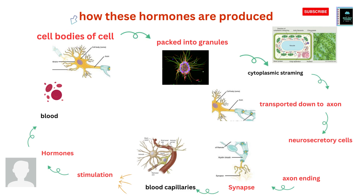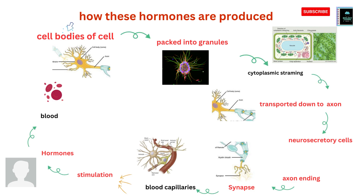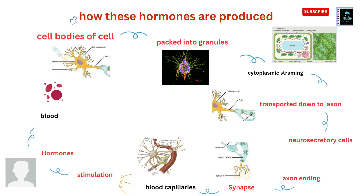When a signal reaches the axon ending of the neurosecretory cells, the axon ending releases the hormones into the blood capillaries. When stimulated, the hormones are secreted into the blood. This is how these hormones are produced and released.